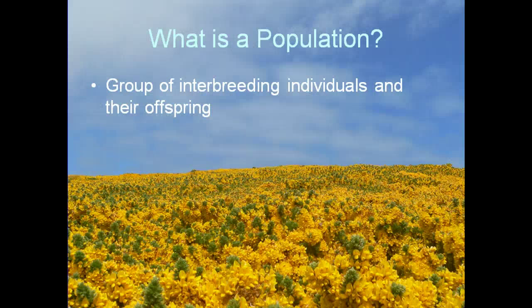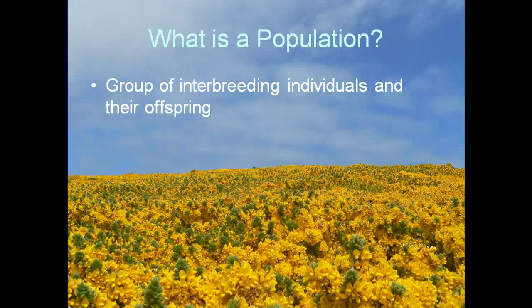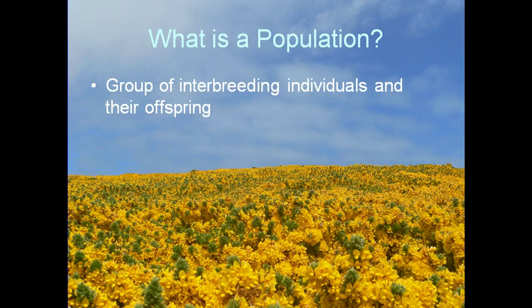We first have to define a population. A population is a group of interbreeding individuals and their offspring. If you were to look at this field of snapdragons, we would say it represents a group of potentially interbreeding individuals and their eventual offspring — this is a population of organisms. We know that adults produce gametes, that gametes combine to make zygotes, that zygotes develop into individuals — particularly juveniles — and those juveniles grow up to be the next generation of adults. In population genetics, what we're interested in is whether particular alleles or genotypes become more or less common in a population over time, and why.